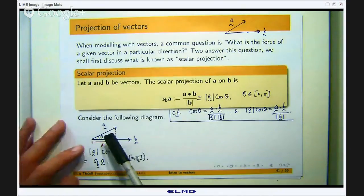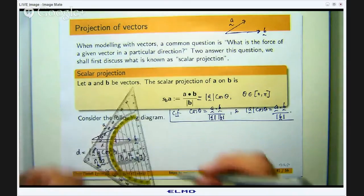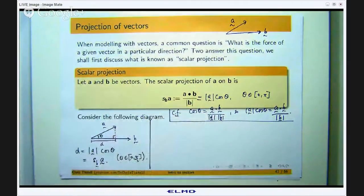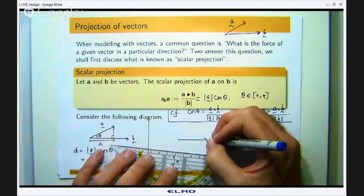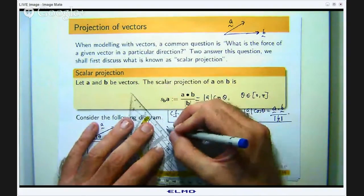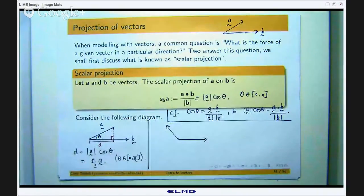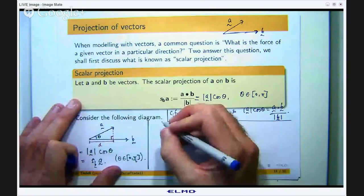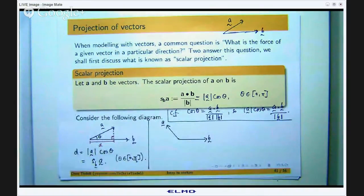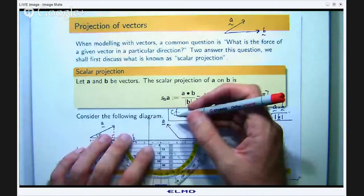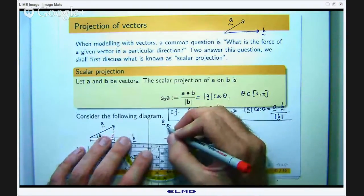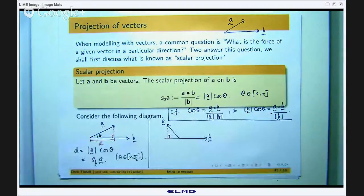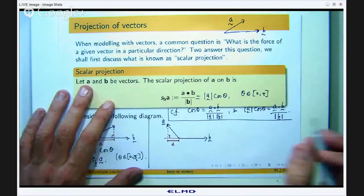Here θ is between 0 and π/2. What happens if A was positioned differently, say if B was like this and A was like this? I can still construct a right angle triangle going to the tip of A and then looking at the line that B lies in, just going down here.